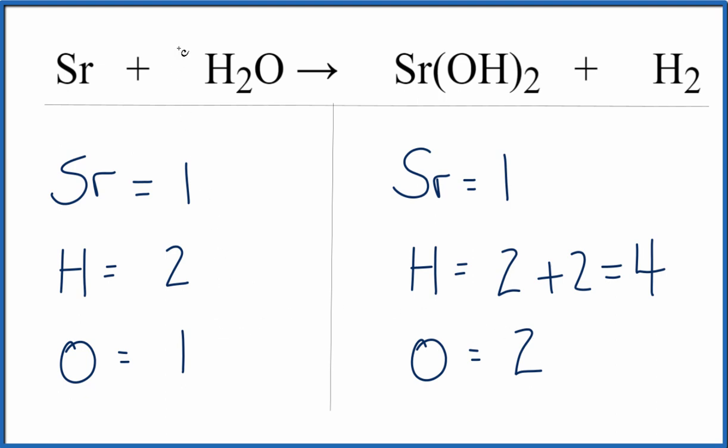So if I double the water, if I put a two as a coefficient, that'll apply to all of these atoms here. So for hydrogen, I have two times the two. That fixes my hydrogen. So I have four on each side of the equation. And then one times the two. That means that my oxygens are balanced. And we're done with this equation.